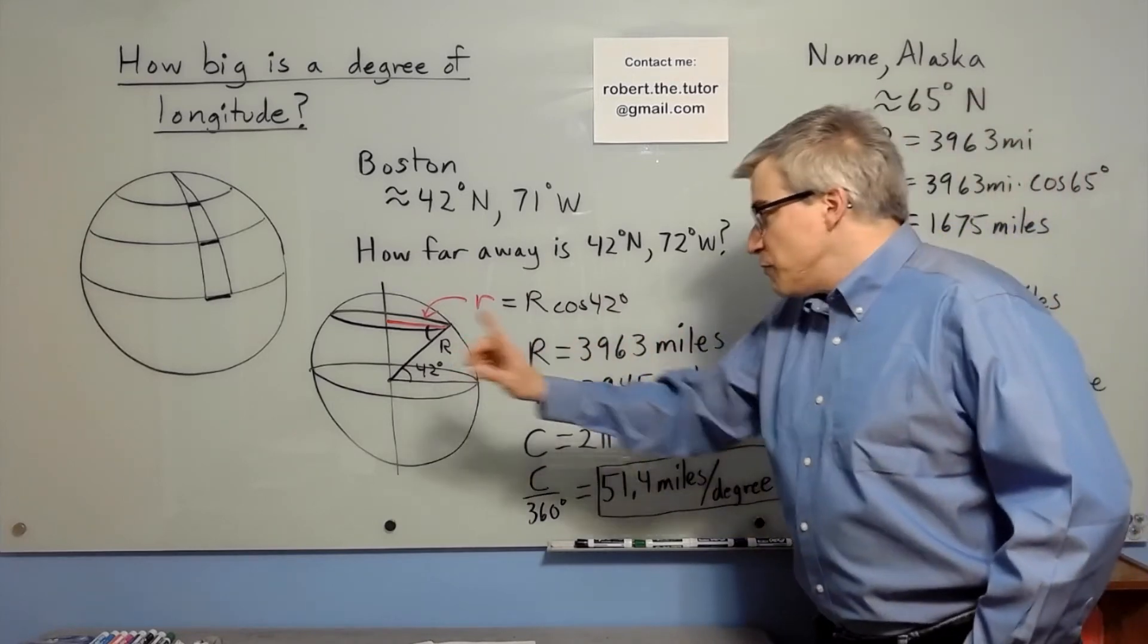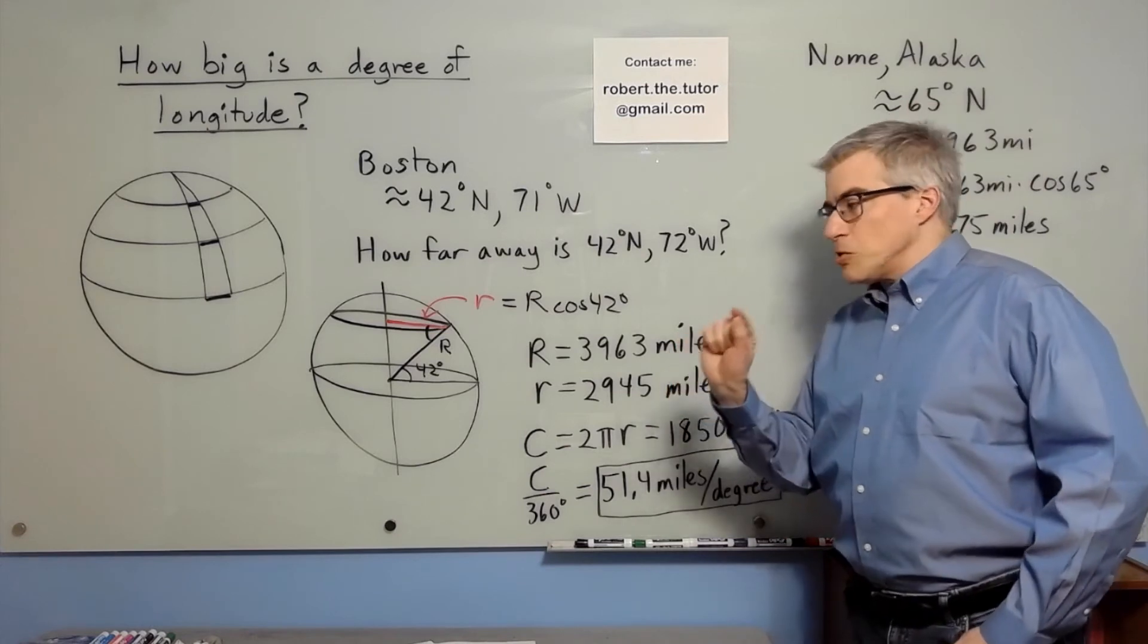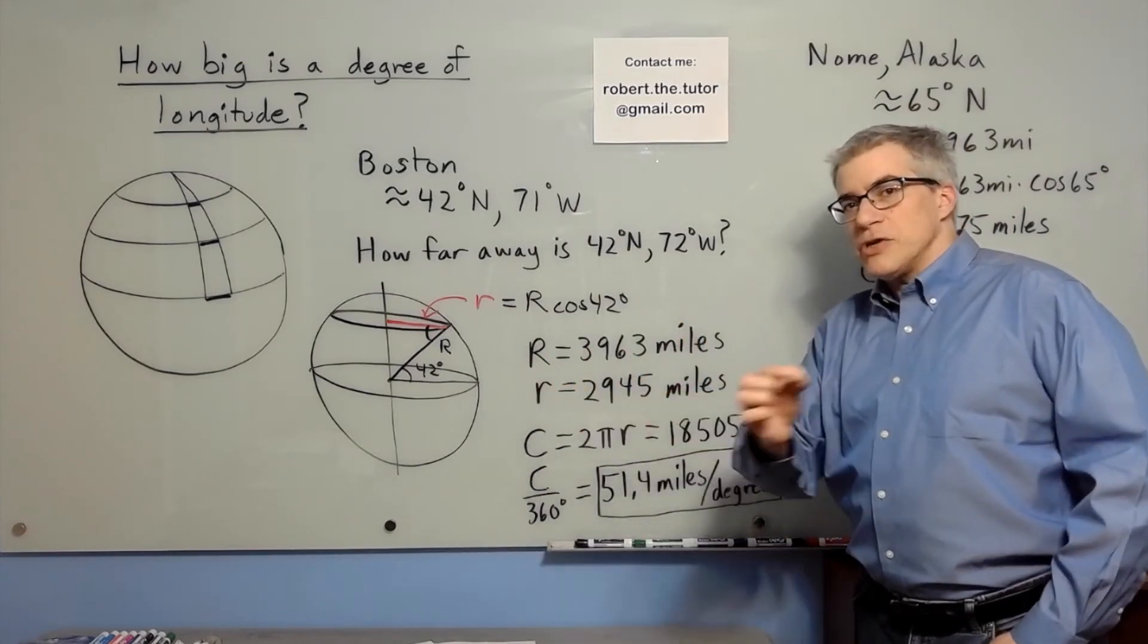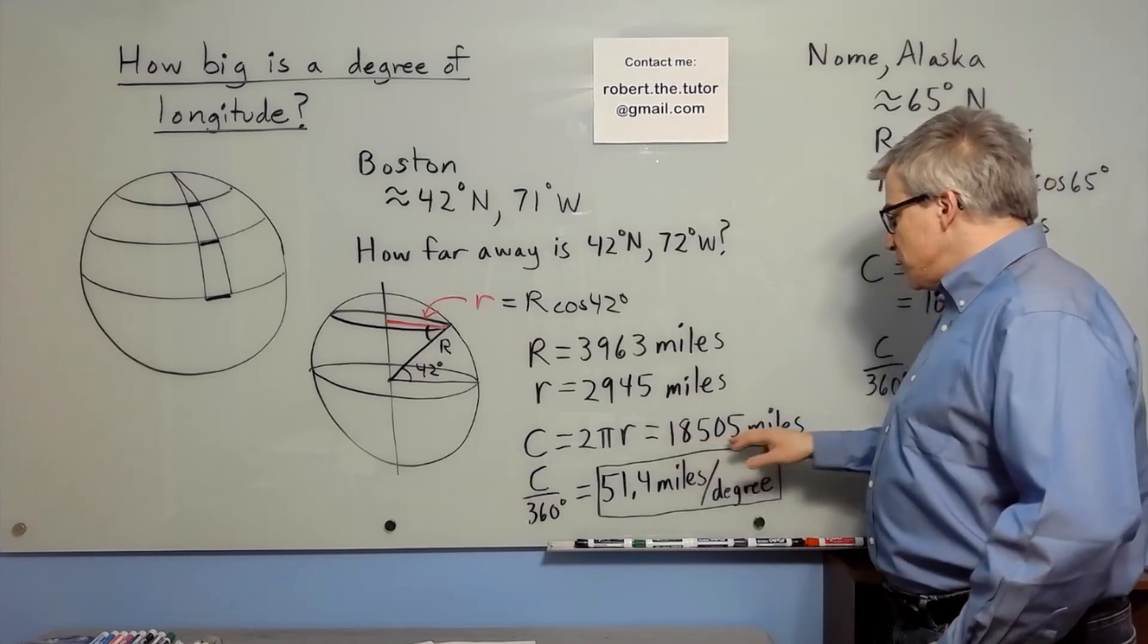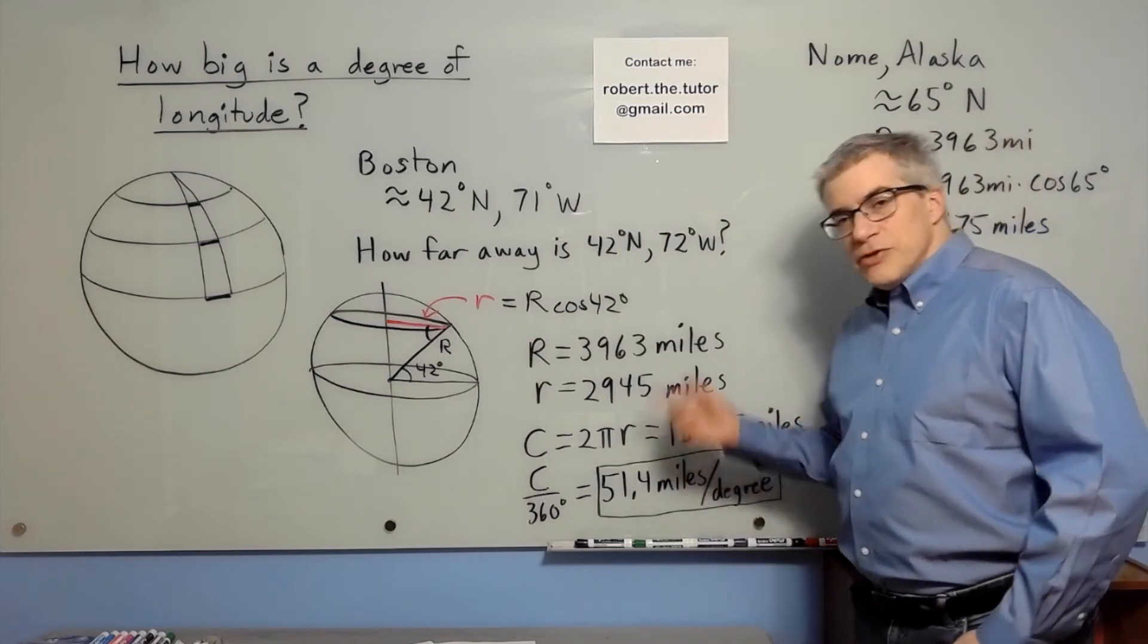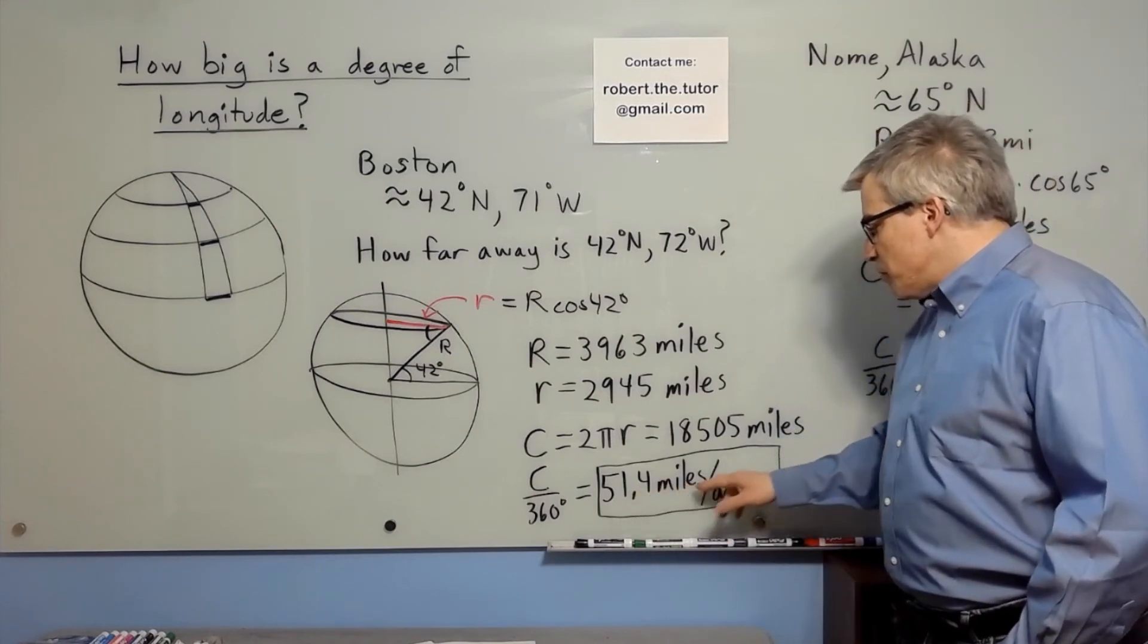Which means the circumference is 2 pi r. That's essentially the size of the circle that Boston travels in every day as the Earth rotates. 18,505 miles. And if you divide that by 360 degrees, you get 51.4 miles per degree.